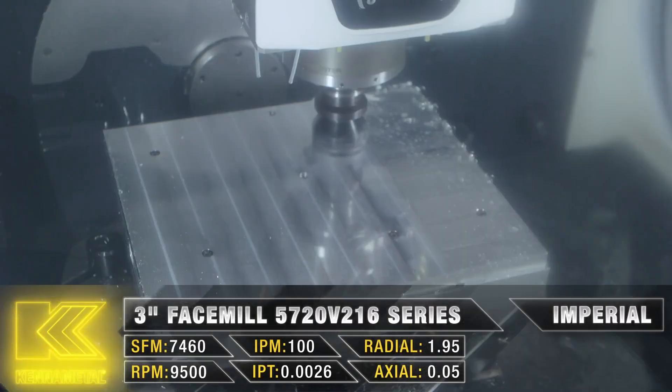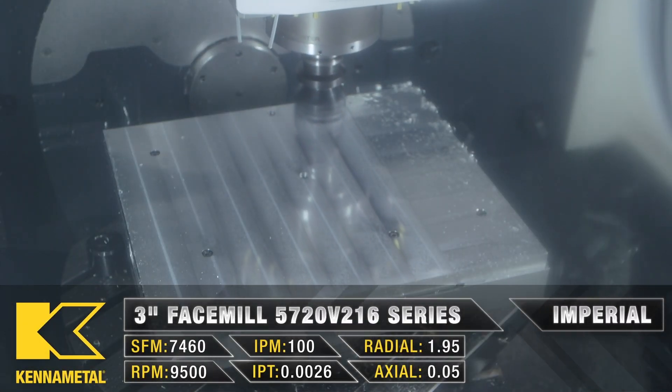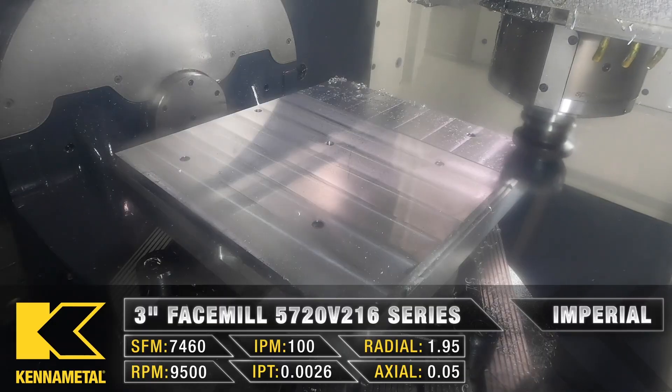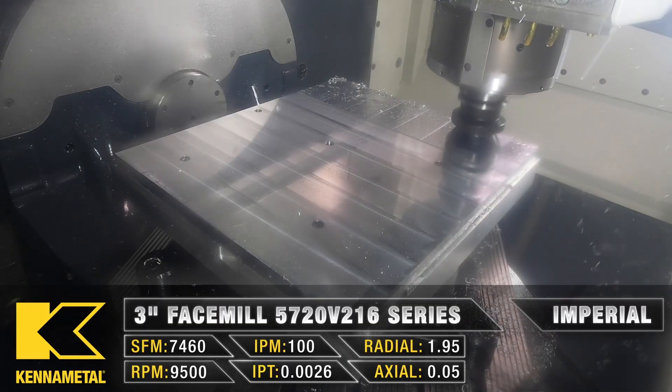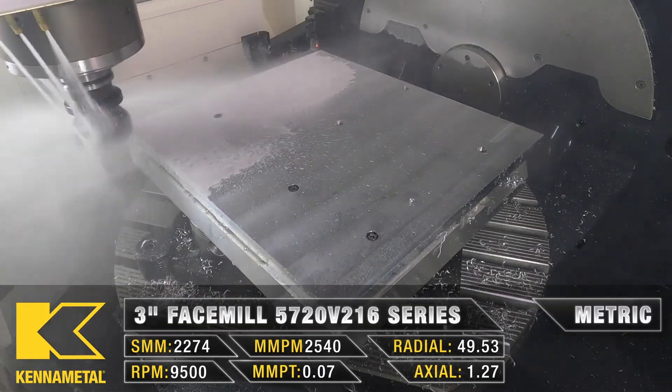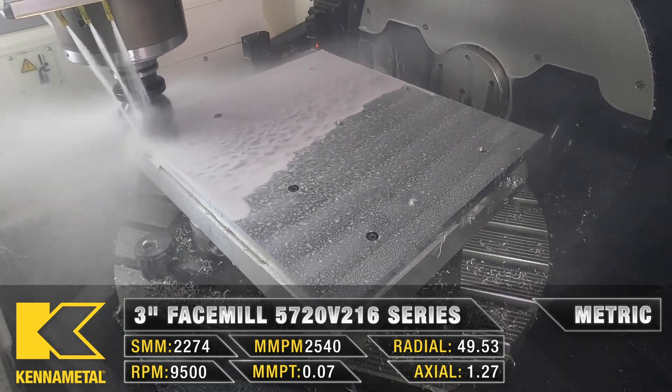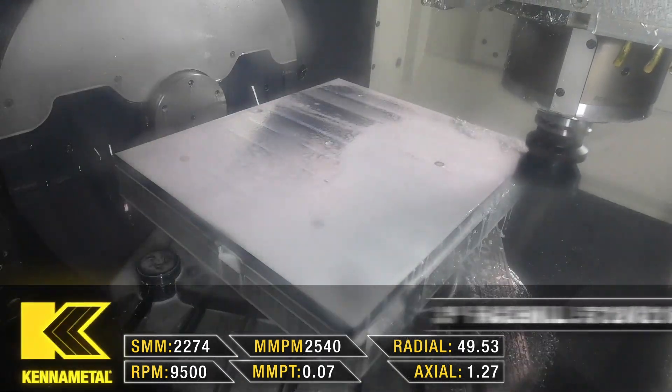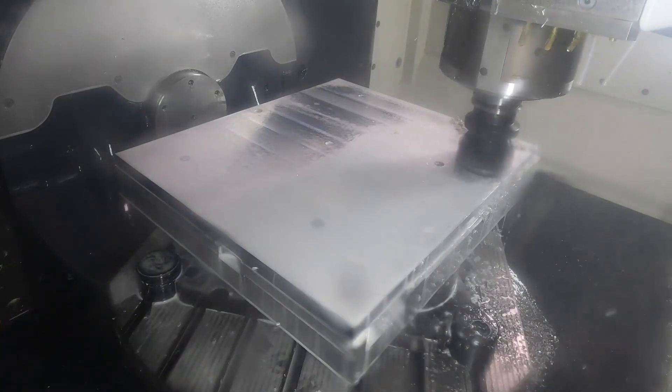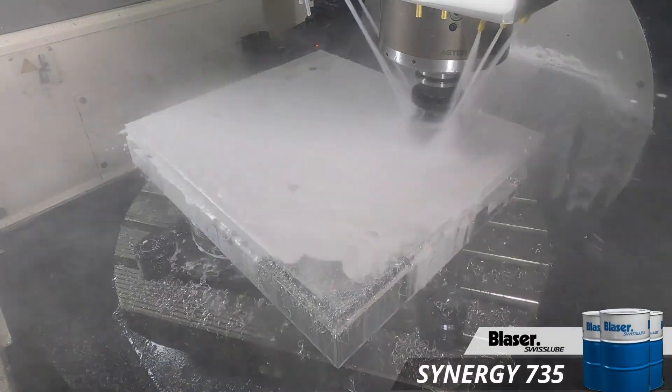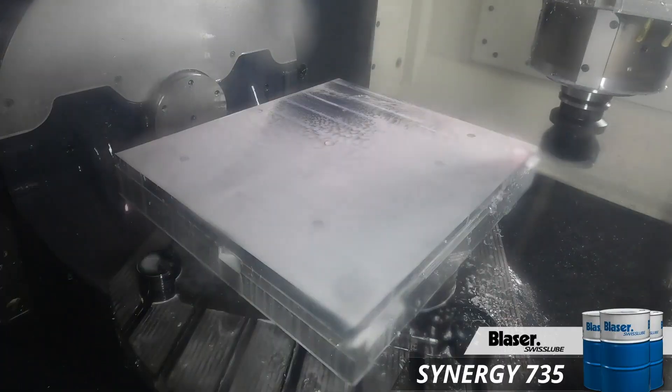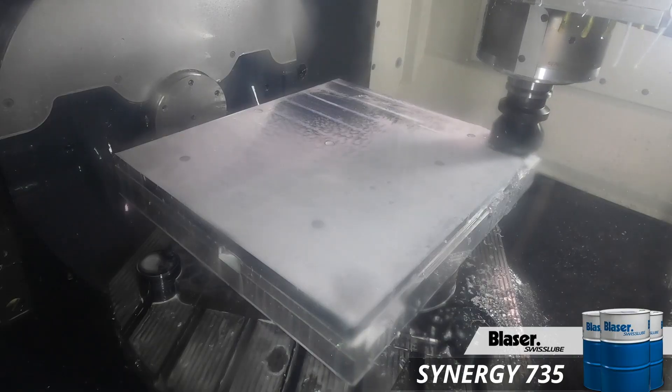In that particular case, we actually put in these perfect holes at the exact same time. Then we took the plate, we flipped it over and then put it onto a custom fixture with ID expansion clamps. We put it over the ID expansion clamps. We expanded the clamps, locked it in place, and then we were able to machine the part complete perfectly.